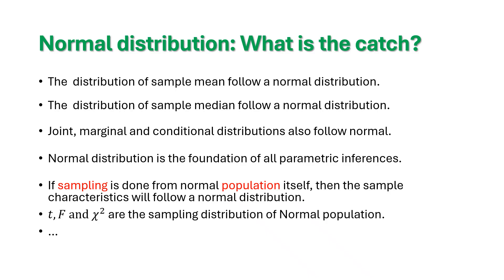Even from non-normal population, if you are sampling, you can make it normal by increasing the sample sizes. And t, F, and chi-square, the most frequently used statistical tests, are nothing but the sampling distribution of the normal population.